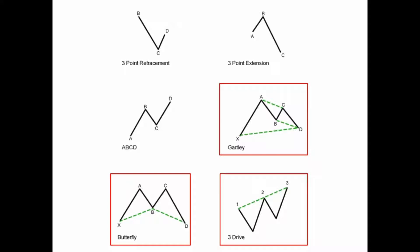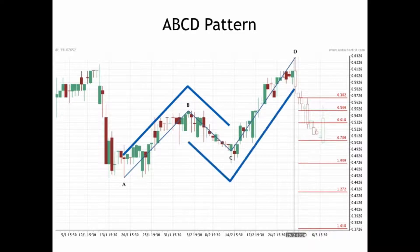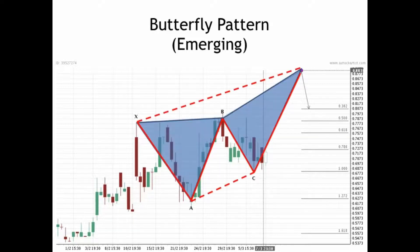As we've mentioned in the video on Fibonacci patterns, all three-point retracements are emerging four-point ABCDs, and many four-point ABCDs are also emerging five-point Gartleys or Butterflies. This is because the patterns with more points contain, or are made up from, patterns with fewer points.